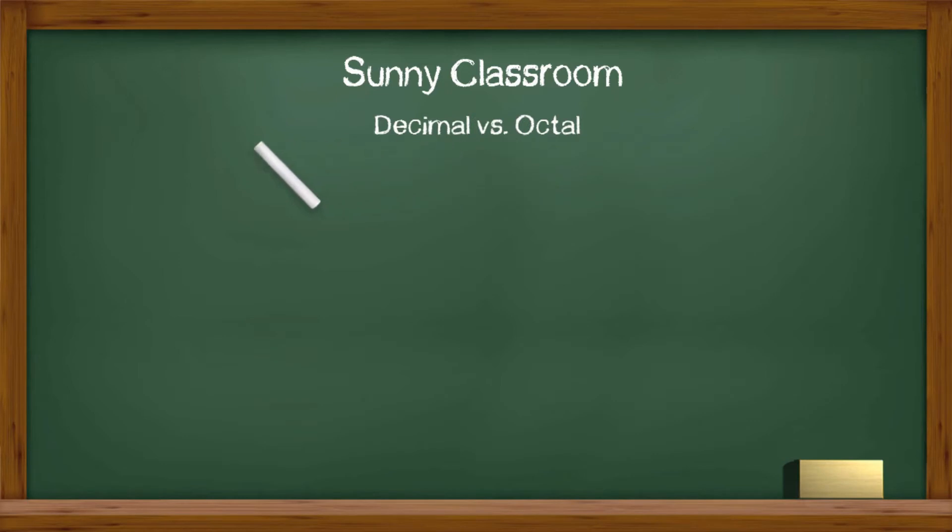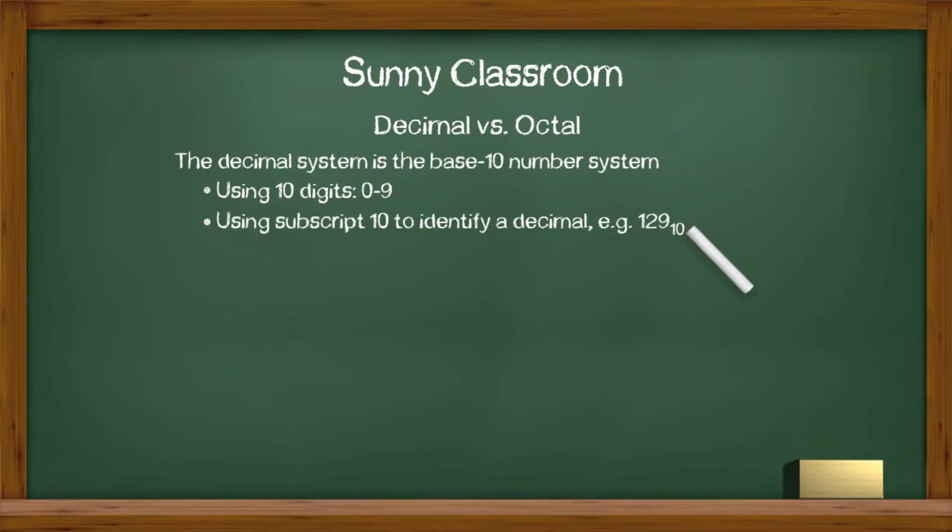The decimal system is the base-10 number system. We use 10 digits, 0 to 9. We use subscript 10 to identify a decimal, especially when we use different number systems side by side. Each decimal place is power over 10.